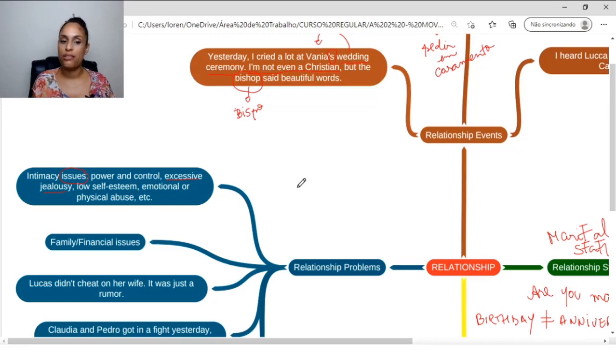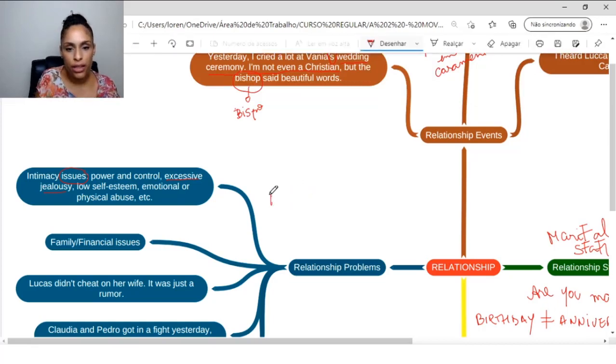Another type of problem that we have when we think about a romantic relationship is, for example, family or financial issues. So, his family doesn't like you, her family doesn't like you, or problems related to money. So, related to, related to. So, we have some problems related to financial, to finance. So, there's a problem related to money, to finances.